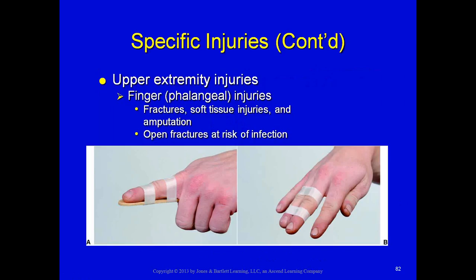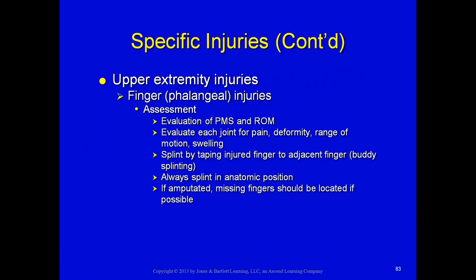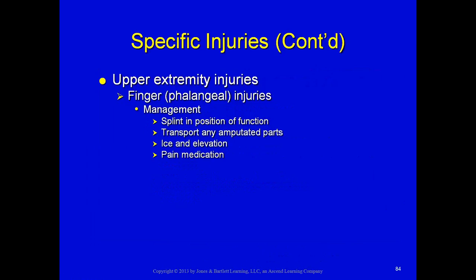Phalange injuries: fingers can be broken or amputated. With an open fracture there is always risk of infection. Splinting options include taping to a tongue blade or using a buddy splint — taped to the non-injured finger on either side. Evaluate PMS and range of motion, and evaluate each joint — proximal interphalangeal, distal interphalangeal, and mid-interphalangeal — for pain, deformity, range of motion, and swelling. Always splint in the anatomical position. If fingers are amputated, try to locate and bring them. Management: splint in position of function, transport amputated parts, ice, elevate, and pain meds.